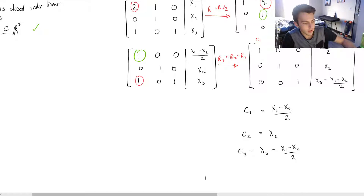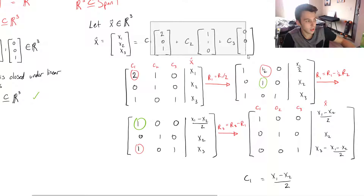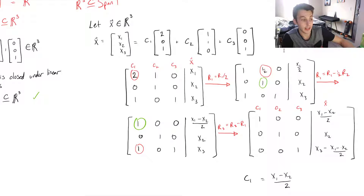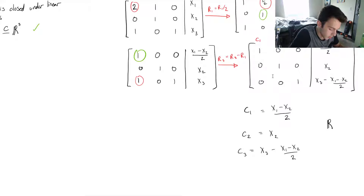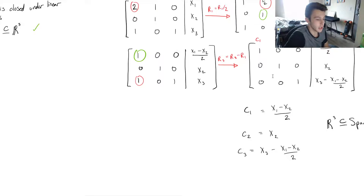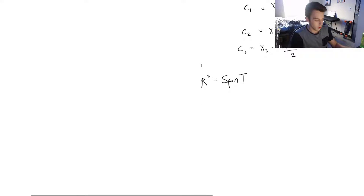What we've done is expressed our constants in terms of any vector X. I could plug in any values of x1, x2, x3 and find constants that make up a linear combination of those three vectors. Since I can do that for any X in R3, that means R3 is a subset of the span of T. So we've now proven that R3 equals the span of T — these three vectors span the entire vector space.